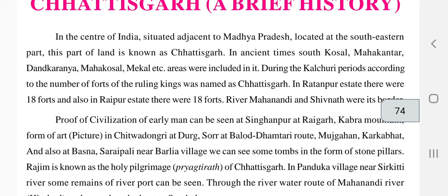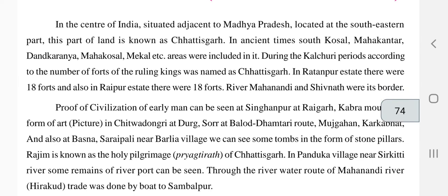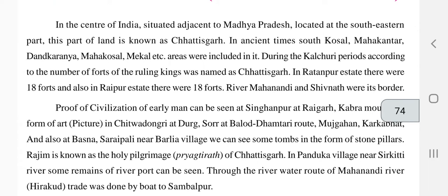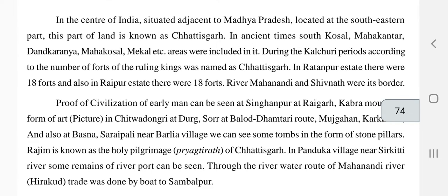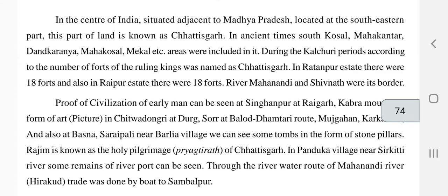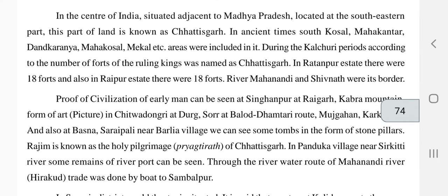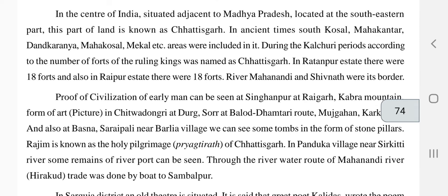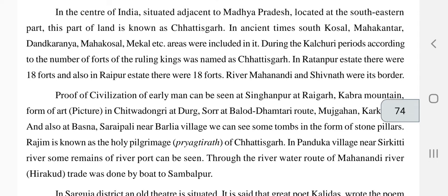During the cultural period, the name Chhattisgarh was given according to the number of forts under different rulers and emperors. In Ratanpur state there were eighteen forts and in Raipur state there were also eighteen forts. Therefore, Mahanandi and Sivnath were the borders of Chhattisgarh.